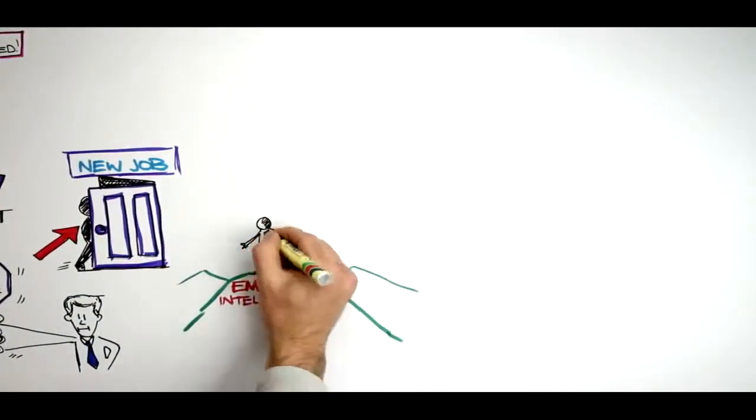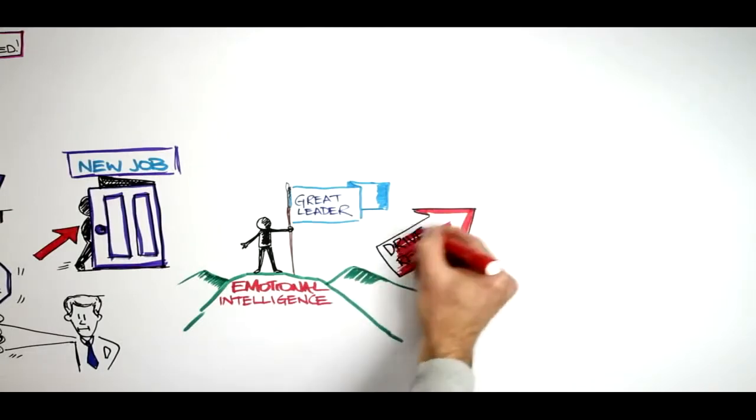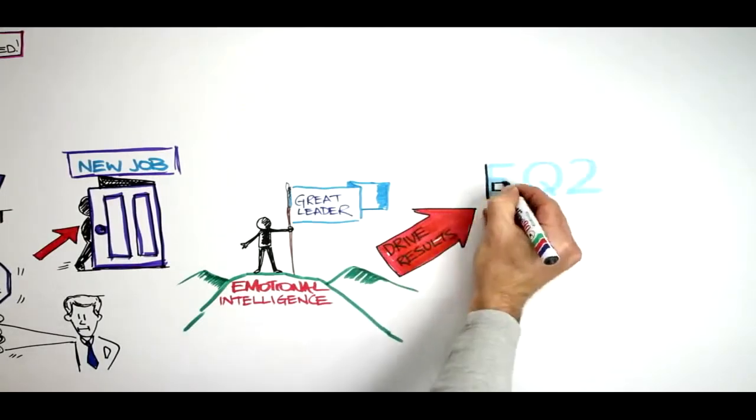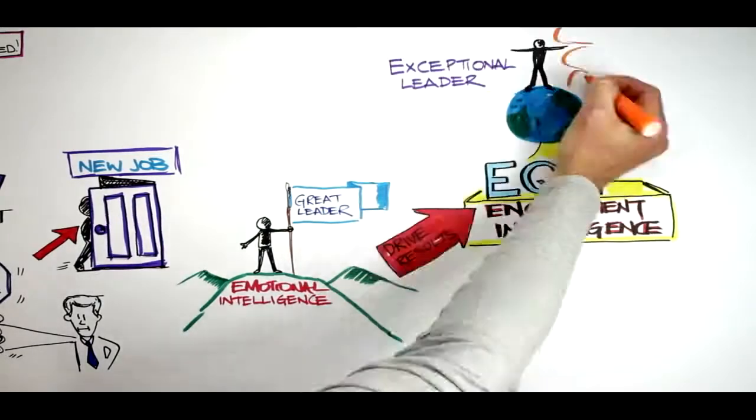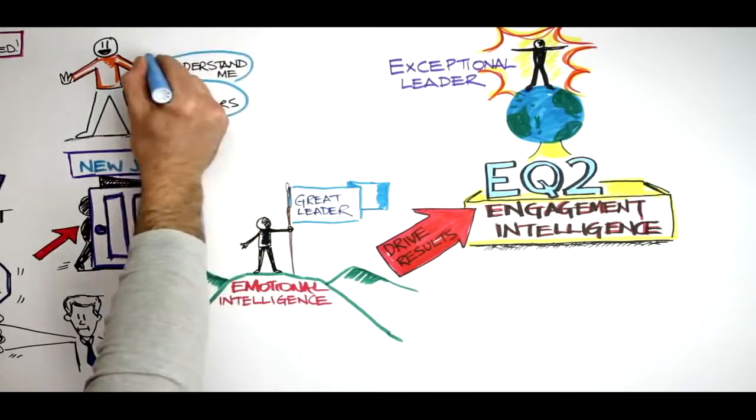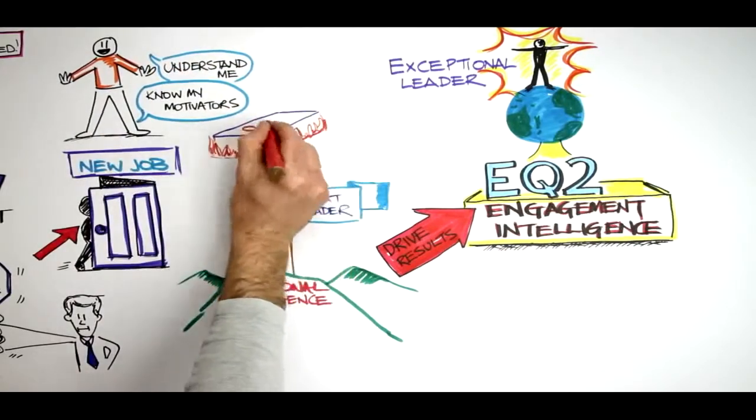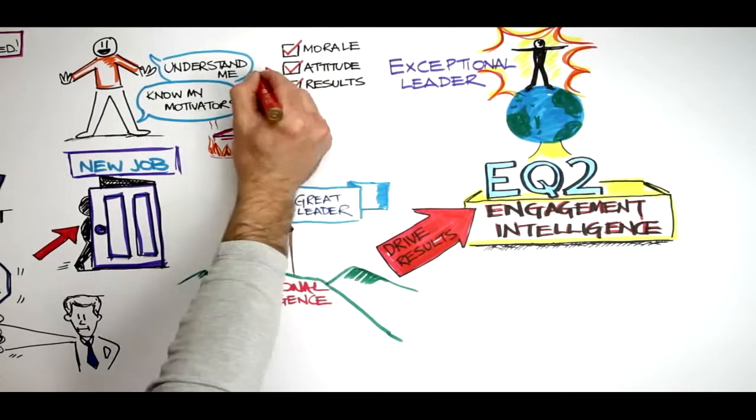Great leaders have emotional intelligence, but to really drive results and be exceptional, leaders need what I call EQ2, engagement intelligence. EQ2 involves really understanding your people, finding their individual motivators, and working on these hot buttons to improve morale, attitude, and results.